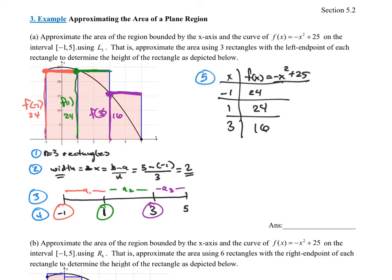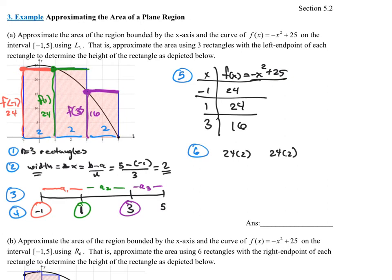We also know the width of every single rectangle is 2 — that's the delta x we found in step 2. So to find the area of each rectangle, it's height times width. The first rectangle: 24 times 2. The second rectangle: 24 times 2. The third rectangle: 16 times 2.